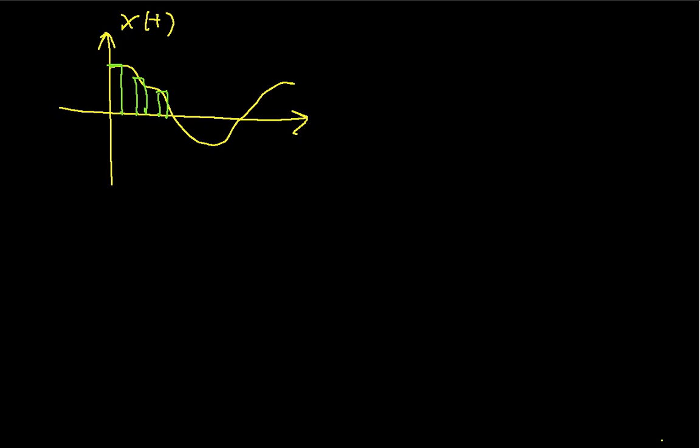And mathematically, you can think of doing this as taking x and multiplying it by a waveform that I'm going to call p of t that looks like this. It's a sequence of rectangles, and each of these rectangles has an area of 1. So if the rectangle is alpha units wide, then it's 1 over alpha units tall.